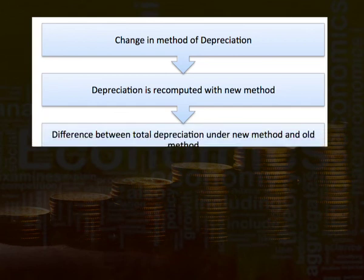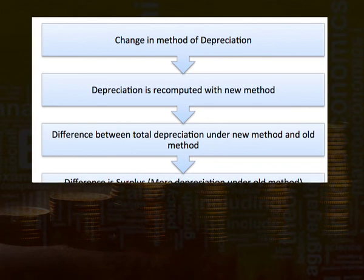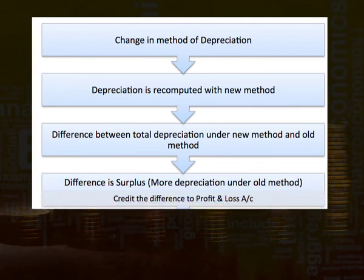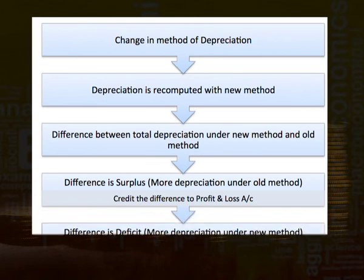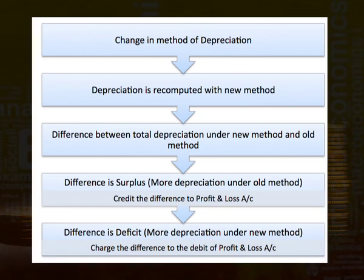The difference between total depreciation under the new method and old method may result in a surplus or deficiency. If the difference is a surplus — that is, more depreciation has been provided under the old method than required under the new method — the amount should be credited to the P&L account under the head 'depreciation written back.' If the difference is a deficiency, the resultant amount should be charged to the P&L account.